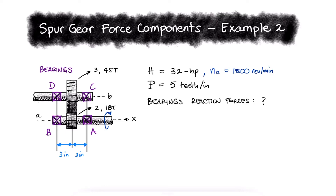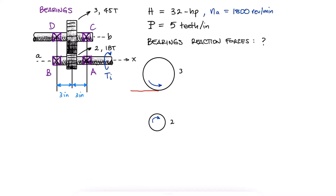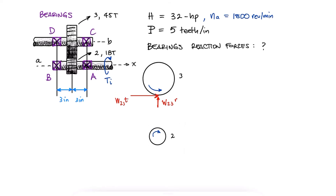If we look at the gears from the positive x-axis, meaning from the right side of the figure, we'd see that gear 3 is rotating counterclockwise due to the interaction force between gears 2 and 3. The reaction forces from this interaction would be seen on gear 2.